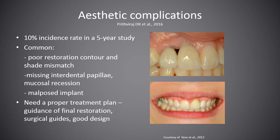Several restorative and anatomical factors can cause aesthetic complications in dental implant treatment. Common complications reported include poor restoration contour and shade mismatch, missing interdental papillae, mucosal recession, and malpositioned implants. Aesthetic implant complications can be minimised by proper treatment planning. The final restoration should be used as a guide for three-dimensional positioning of the dental implant, which is key for aesthetics. Patients should be informed about the limitations of aesthetic results, and surgical guides should be used for location and angulation of the dental implants. Good implant design is also needed.